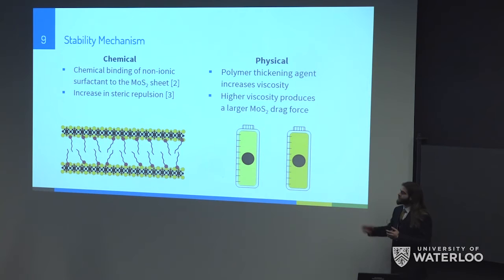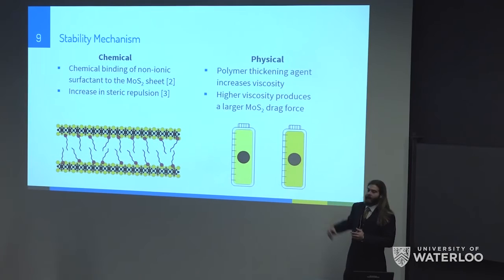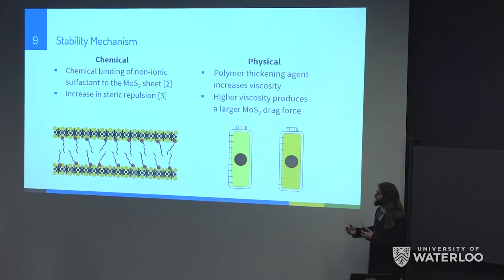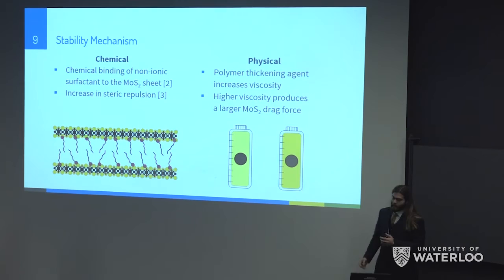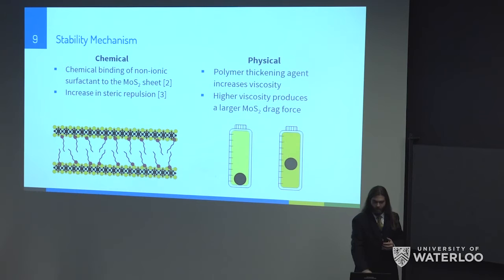Stabilization is achieved through two means: chemically and physically. Chemically, the surfactant binds to the surface of the MoS₂ particles so their tails stick outward toward each other and experience steric repulsion, preventing agglomeration. Physically, the polymer increases the viscosity of the concentrate so that while gravity naturally wants to settle the particles to the bottom, the increased drag force from the thickness prevents that from happening, thus extending the product's shelf life.